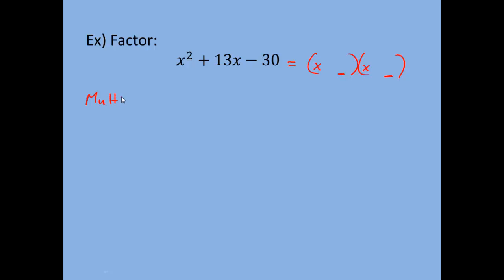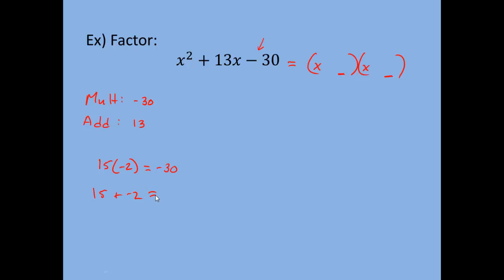We need numbers that multiply to negative 30 and also add to the middle term, which is positive 13. Make sure you take the sign with c, which is negative 30. The numbers that work are 15 and negative 2: 15 times negative 2 equals negative 30, and 15 plus negative 2 equals positive 13. So we fill in the blanks with positive 15 and negative 2, giving us x plus 15 times x minus 2 as the factored form.